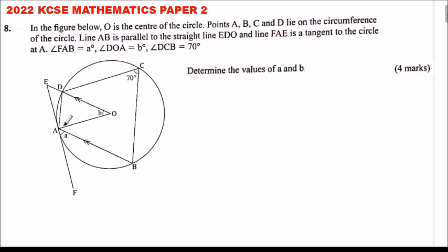Since angle DCB is 70 degrees, the opposite angle DAB is 110 degrees. We also know that angle OAF is 90 degrees, because the tangent and the radius meet at a right angle.